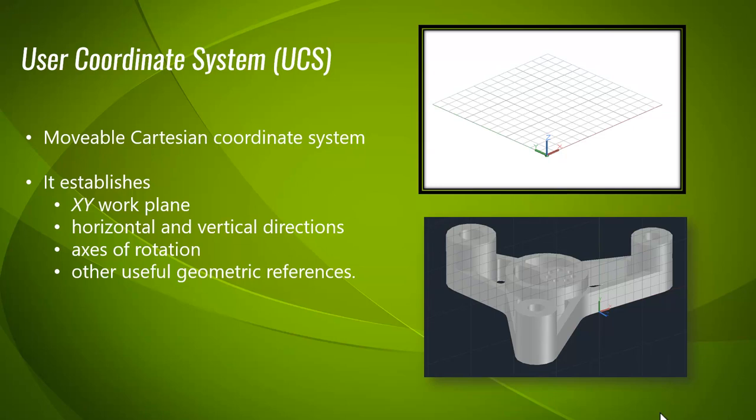Before understanding UCS, you must know that the drawings which you do in AutoCAD are always drawn on the XY plane. So it's our requirement to align the XY plane according to our need in the software. AutoCAD has become so advanced that it can automatically align the UCS according to the object you select, which is known as dynamic UCS. It will also help you to establish horizontal and vertical direction along with the axis of rotation.